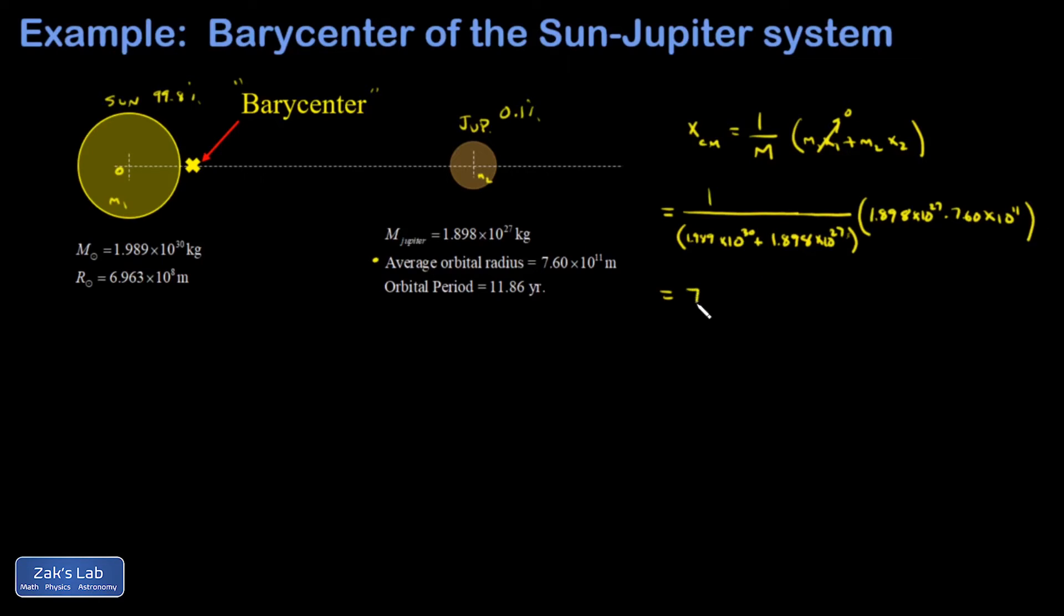When I crunch all these numbers, I get 7.25 times 10 to the 8th meters. So if I compare to the radius of the Sun, I'm told back here the radius of the Sun is 6.963 times 10 to the 8th. We're just outside the surface of the Sun.